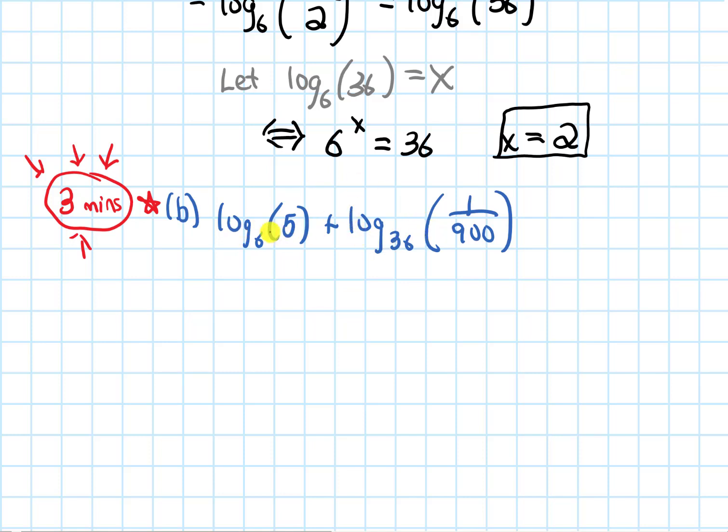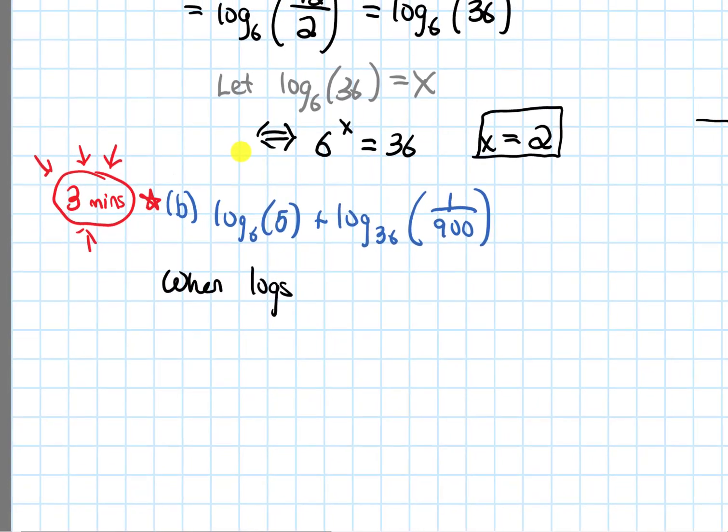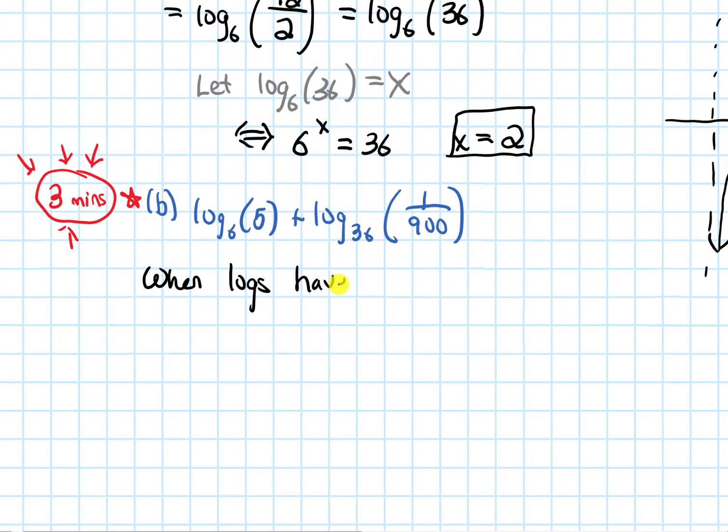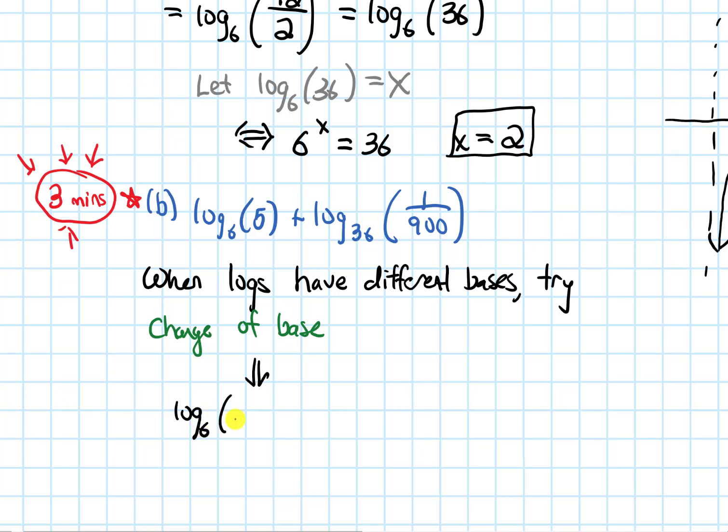So one of the key things that makes it difficult to combine the logs right now is the fact that they have different bases. So when logs have different bases like this, we often want to try using change of base to make the bases the same, so that we can do things like add the logs together and multiply their insides or divide their insides if we're subtracting. Okay, so I'm going to pick one of these logs to change the base on, and it doesn't really matter which one I pick. So let me just keep the first log the same, log base 6 of 5.